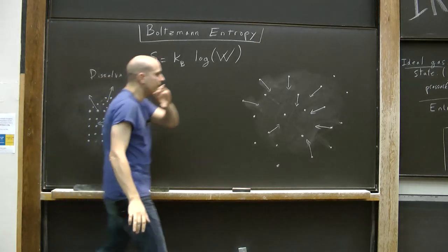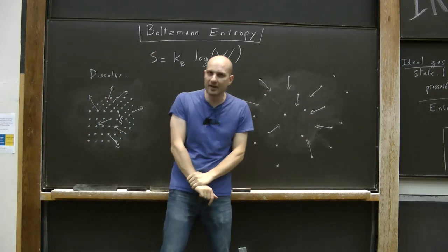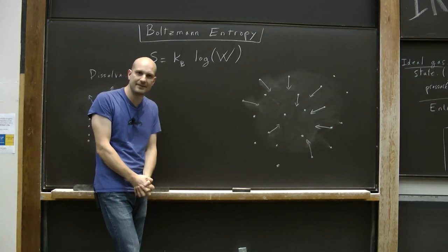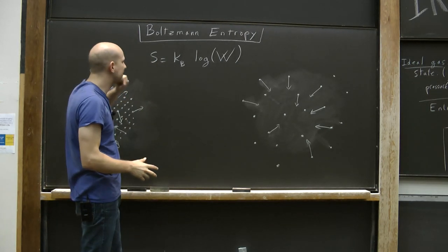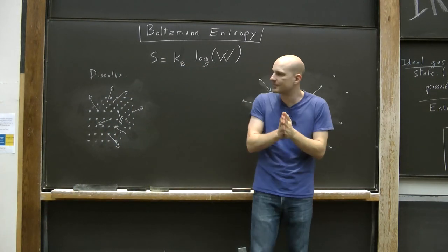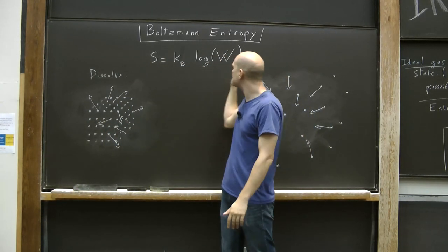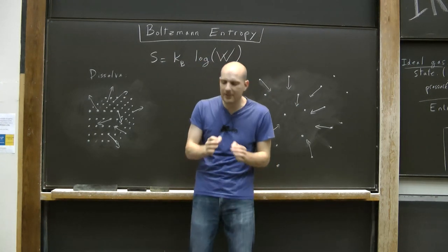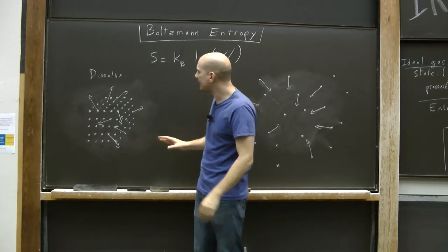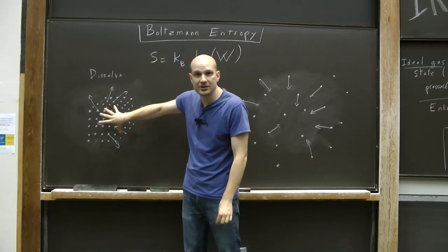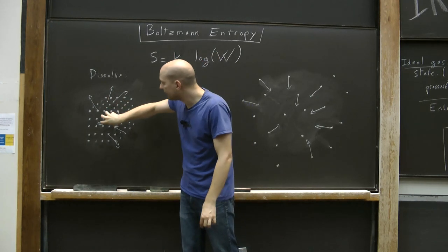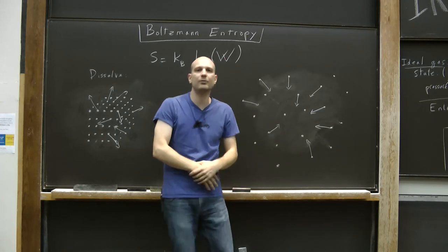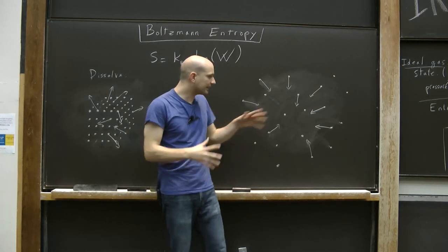Whereas the entropy of the dissolved state is high because there are very many different states that look like a dissolved state. So the idea that entropy is quantifying irreversibility is captured by this formula through the fact that irreversible motions are motions that go from configurations that only exist in a few states, like the sugar cube, to configurations that exist in very many states, like dissolved sugar.